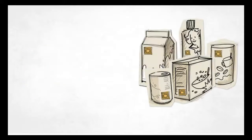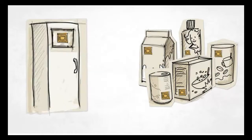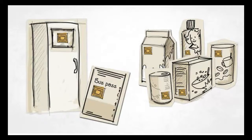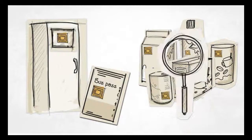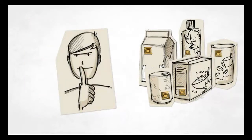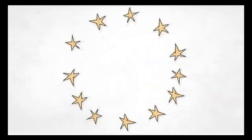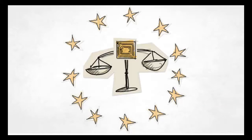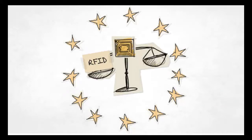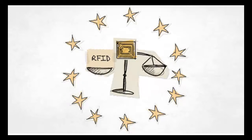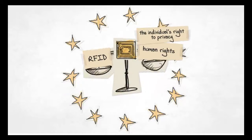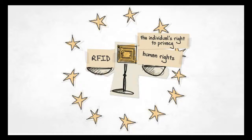RFIDs can be integrated into almost any everyday object, from fridges to bus passes. The fact that these devices can be read, updated and tracked has raised privacy concerns. The European Union is therefore developing legislation to ensure that the use of RFID never compromises basic human rights and the individual's right to privacy.